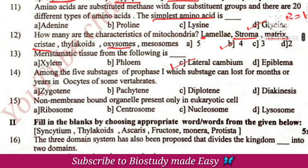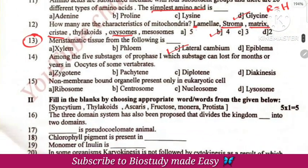Meristematic tissue — lateral cambium. Among the 5 stages of prophase 1, the diplotene stage is seen in oocytes of some vertebrates. Non-membrane bound organelles present only in eukaryotic cells — this is the centrosome.